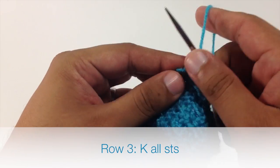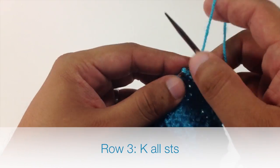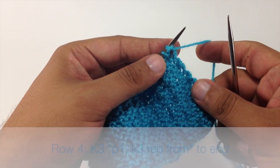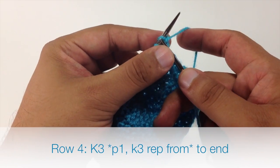Row 3. We are going to knit all stitches. Row 4. We are actually going to repeat row 2 here. So we are going to start by knitting 3.